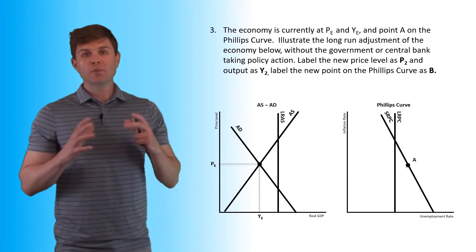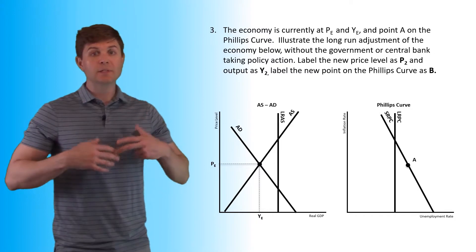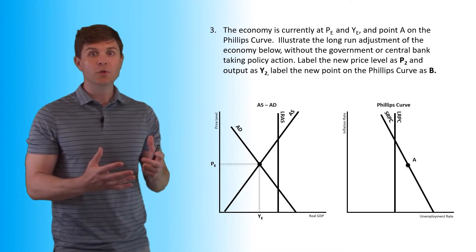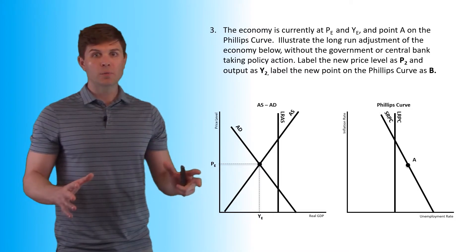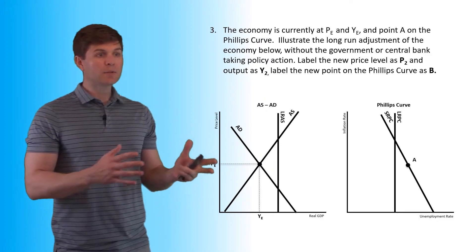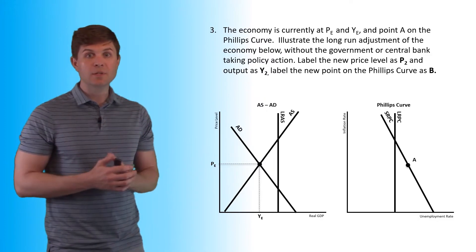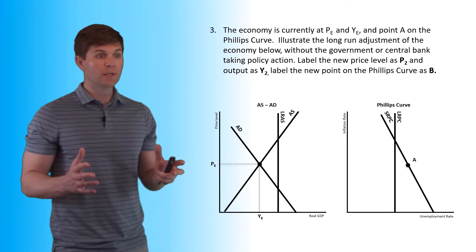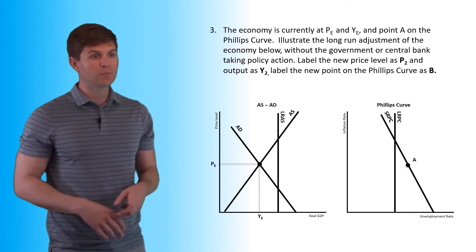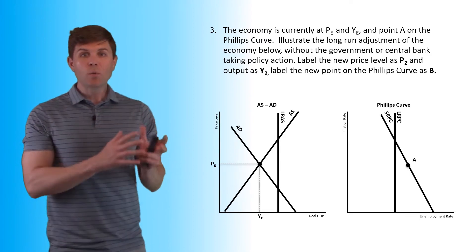All right, now this one has you illustrate the changes on the curve for the long run adjustment. Now on the model to the left we have an AS-AD curve in a recessionary gap. The recessionary gap is indicated by the Phillips curve, but how will this adjust back?